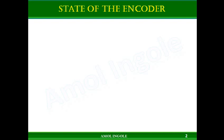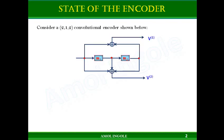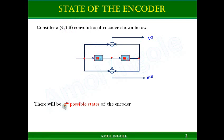Before we start discussing the tree diagram, let's see what is the state of the encoder. To understand the state of the encoder, we will consider one convolution encoder shown on the screen. This encoder has two memory units, two outputs, and block size 2,1,2. The state of the encoder depends on the number of memory units — if there are two memory units, there will be 2 raised to power m possible states.